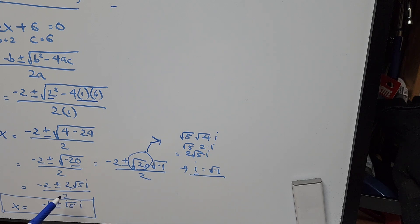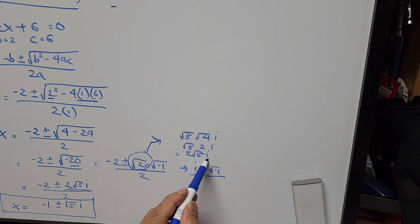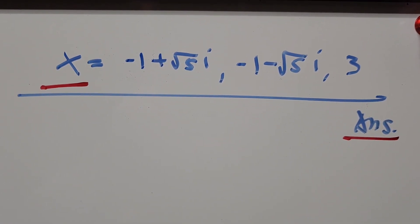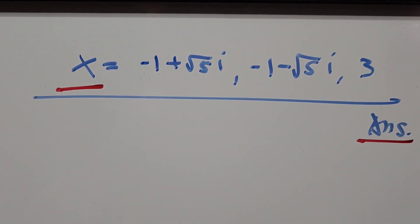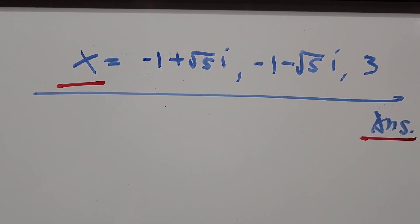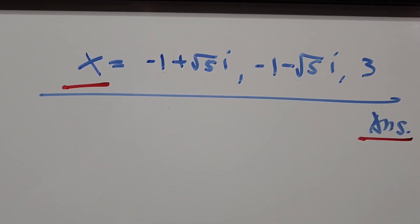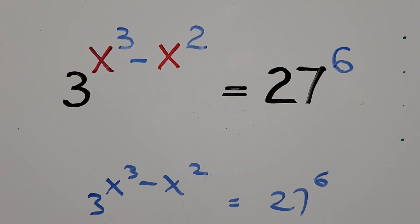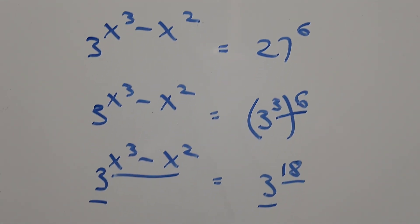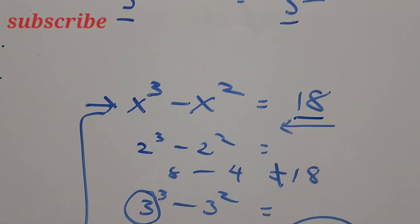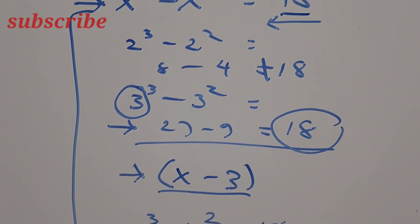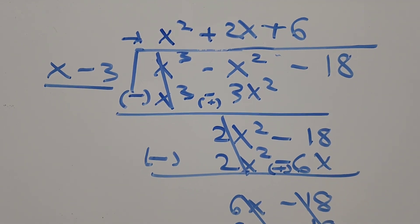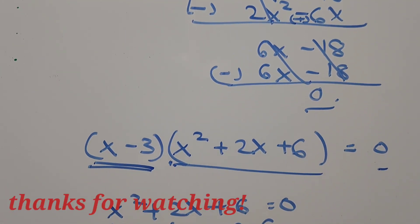So 2 square root of 5 times i. We have those three roots of x: negative 1 plus square root of 5 times i, negative 1 minus square root of 5 times i, and 3. That's all for now — thank you for watching, please like and subscribe, and have a great day everyone!